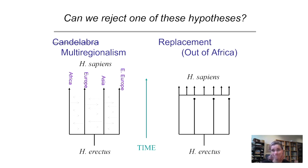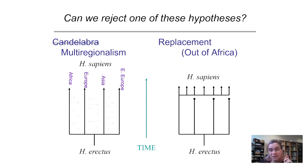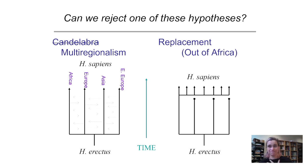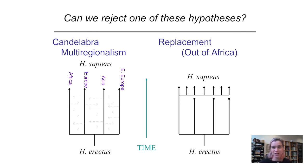The overarching pattern of relatedness is actually the same between the two models. So what is the fundamental difference between them? Time. The difference is when did the diaspora happen — long enough ago that the characters were Homo erectus, or recent enough that the players were Homo sapiens? This is where we get to the next clever part of the Cann, Wilson, and Stoneking study.